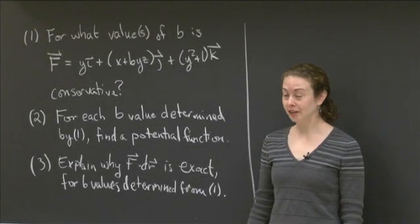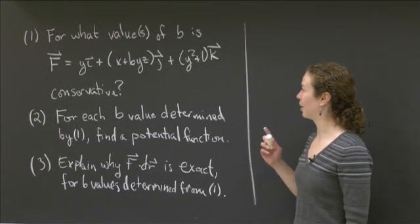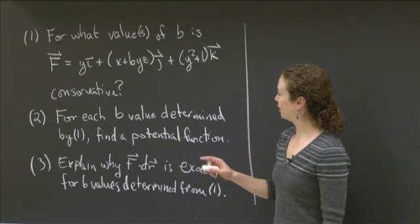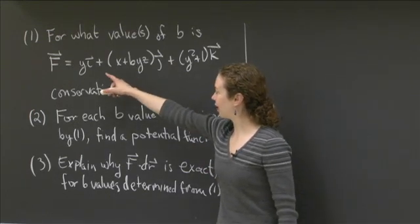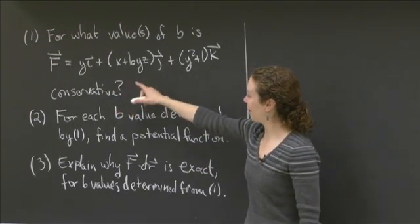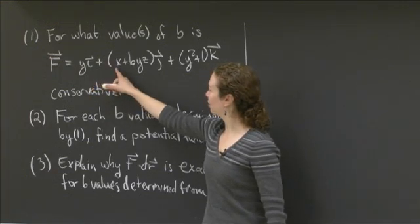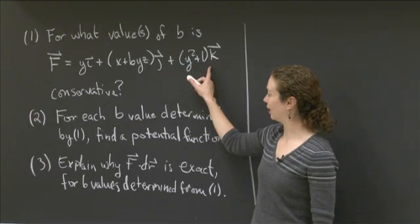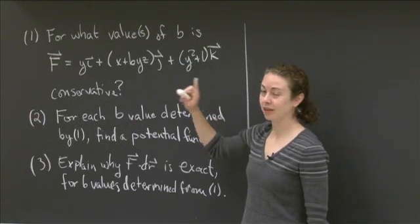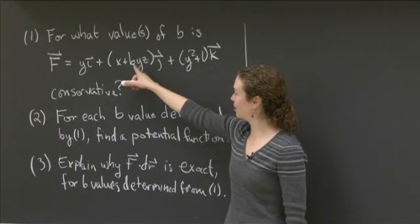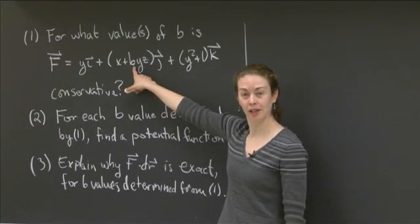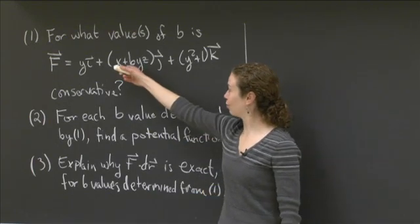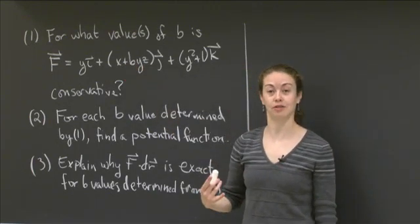Welcome back to recitation. In this video, I'd like us to consider the following problem. The first part is: for what values of b is this vector field F conservative? F is defined as yi plus the quantity (x + byz)j plus the quantity (y² + 1)k. The only thing we're allowed to manipulate is b, which will be some real number, and I want to know what real numbers make this vector field conservative.